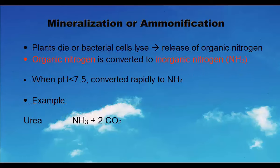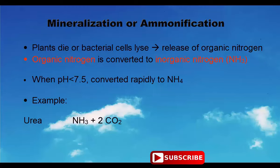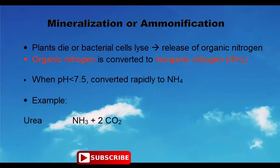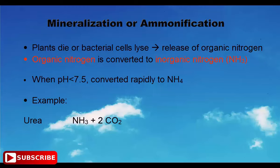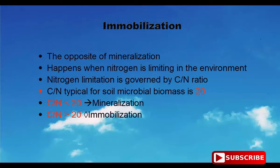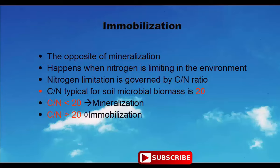In mineralization and ammonification, when plant or bacterial cells die or lyse, organic nitrogen is released and converted to inorganic nitrogen. When pH equals 7.5, conversion to NH4+ occurs rapidly. Immobilization is the opposite of mineralization and happens when nitrogen is limiting in the environment.